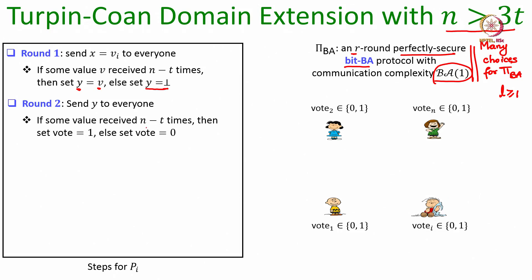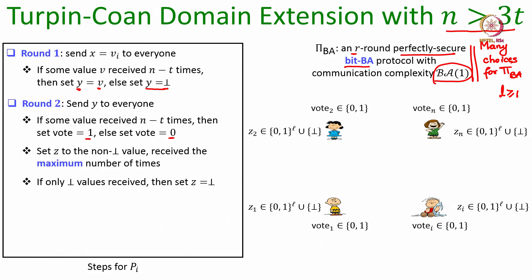Depending on how many copies of a particular Y value P_i receives, it sets its vote variable. If P_i receives a specific Y value from at least n minus T different parties, it sets its vote variable to 1; otherwise it sets its vote variable to 0. Different parties may end up assigning different values to their respective vote variables.